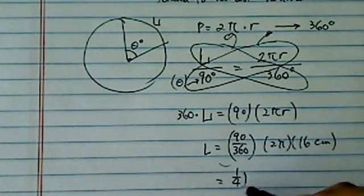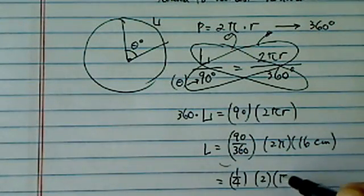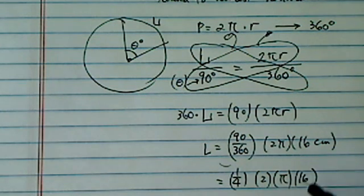So a quarter times 2 times pi times 16. 16 and this cancel, that's 4, so I have 8 pi in centimeters.